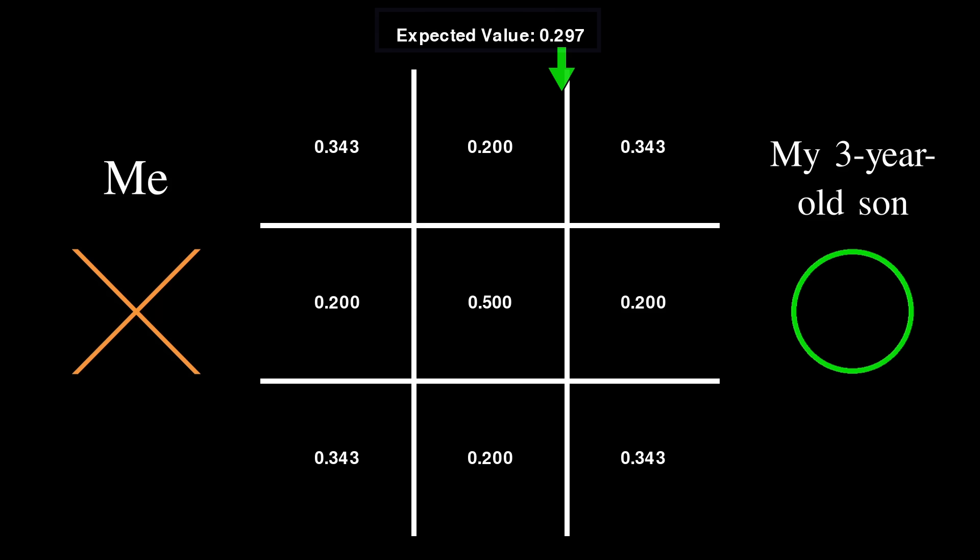My goal was to lower this value, pushing it as negative as possible, since the negative value indicates more positive outcomes for O, my three-year-old son. The best I could do on this first move was to lower the expected value to 0.2 by choosing an edge, and so that's what I did.